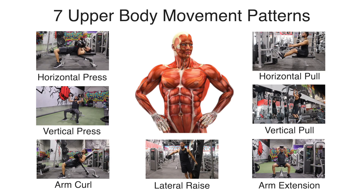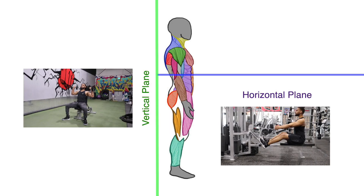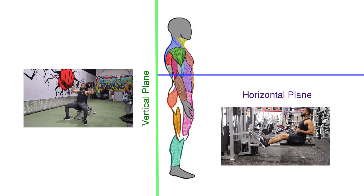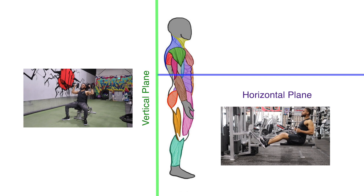The seven patterns are: a horizontal press, horizontal pull, vertical press, vertical pull, a break at the arm, an extension of the arm, and some sort of lateral raise. The horizontal plane is 90 degrees from your body — this is where you are pressing in front of you or pulling behind you. The vertical plane is in line with the rest of your body, where you are pressing something straight overhead or pulling something straight down.